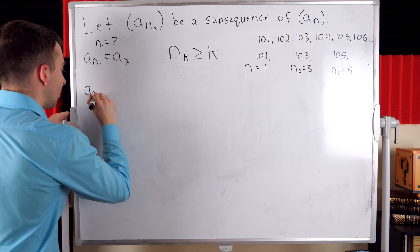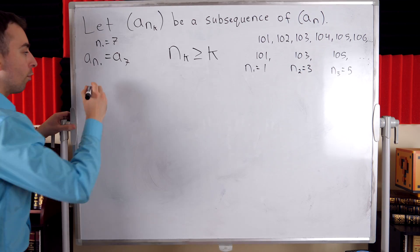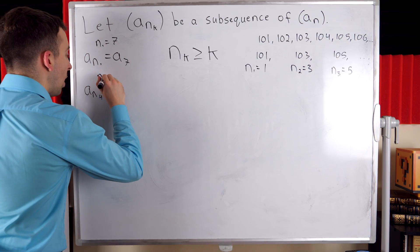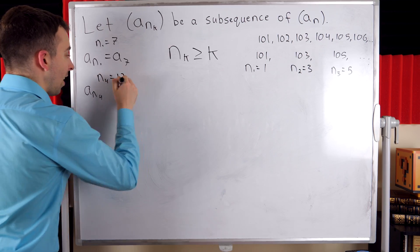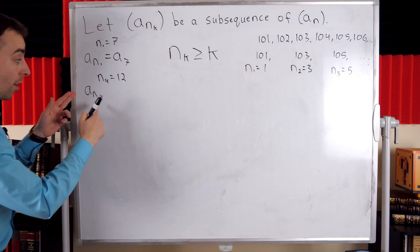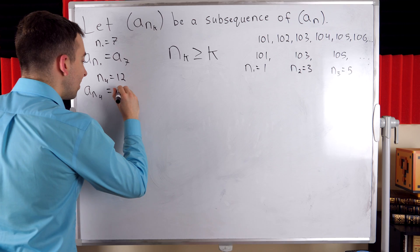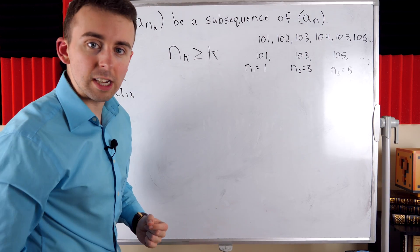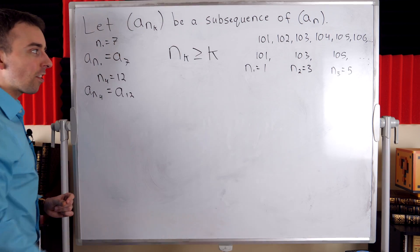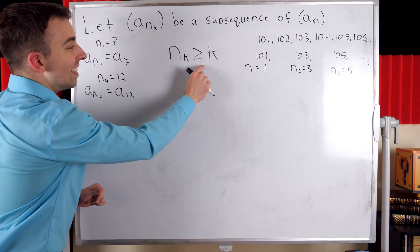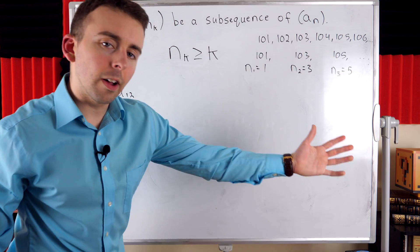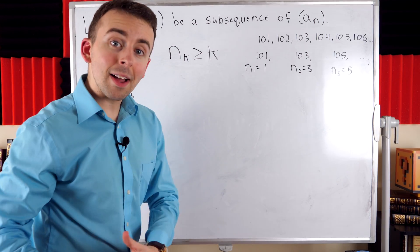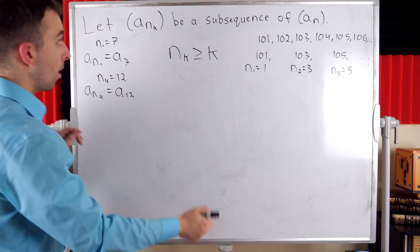For another example, consider a_{n_4}, the fourth term of a subsequence. If n_4 equals 12, then the fourth term of the subsequence is a_{12}, the 12th term of the original sequence. Again, the kth term of a subsequence is at least k terms along into the original sequence, and this is just by definition of a subsequence.